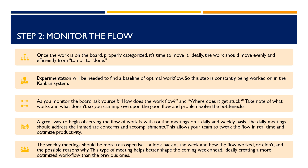A great way to begin observing the flow of work is with routine meetings on a daily and weekly basis. The daily meetings should address the immediate concerns and accomplishments, allowing your team to tweak the flow in real-time and optimize productivity. The weekly meetings should be more retrospective — a look back at the week and how the flow worked or didn't, and the possible reasons why. This helps better shape the coming week ahead, ideally creating a more optimized workflow than the previous ones.